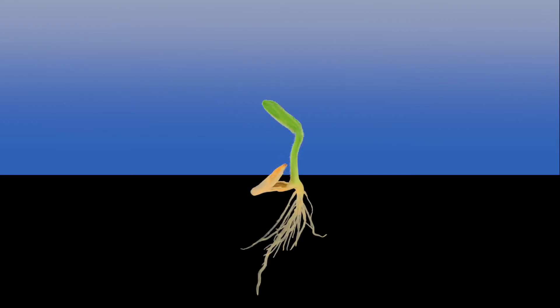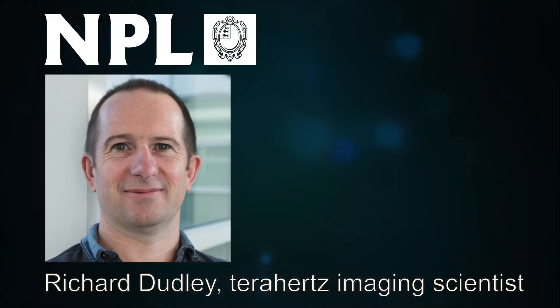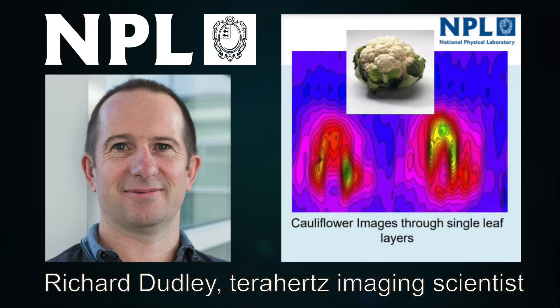Real world applications: plants draw in water through roots using osmosis, and water content in vegetables indicates healthiness and ripeness. NPL scientist Richard Dudley uses invisible light called terahertz radiation to investigate cauliflower ripeness by water content, saving millions of pounds otherwise wasted by harvesting too early or too late.